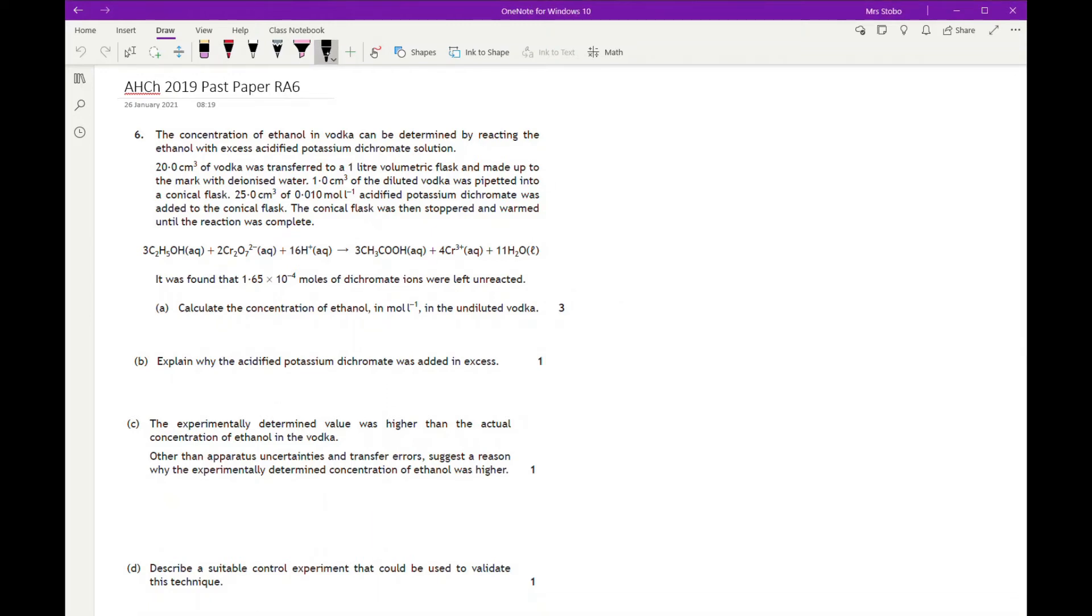We're looking at a concentrations and volumetric calculation. You're going to work out what bits you're looking for. The important things we're looking at are the ethanol and the dichromate.